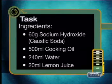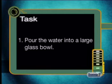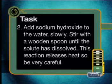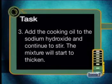Here's the recipe for making soap. Our ingredients are 60 grams of sodium hydroxide (caustic soda), 500 millilitres of cooking oil, 250 millilitres of water, and 20 millilitres of lemon juice. Step 1: pour the water into a large glass bowl. Step 2: add sodium hydroxide to the water slowly and stir with a wooden spoon until the solute has dissolved. This reaction releases heat, so be very careful.